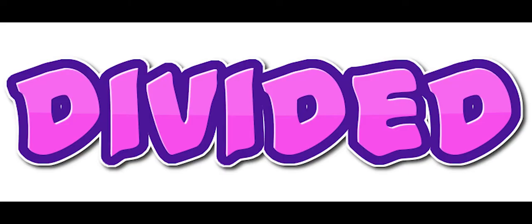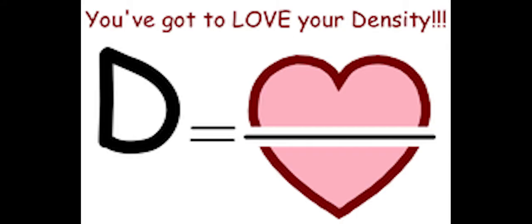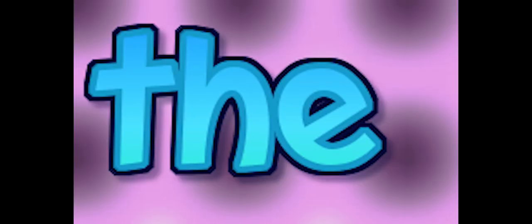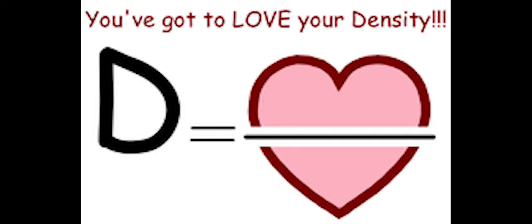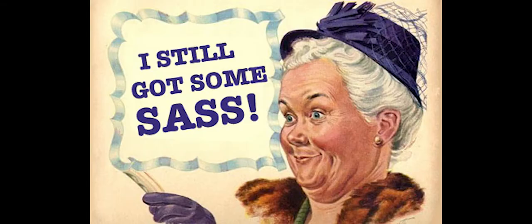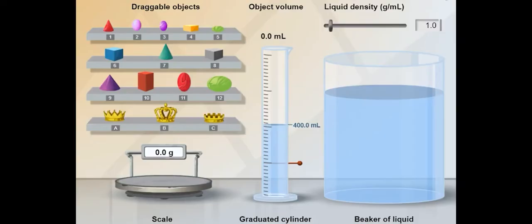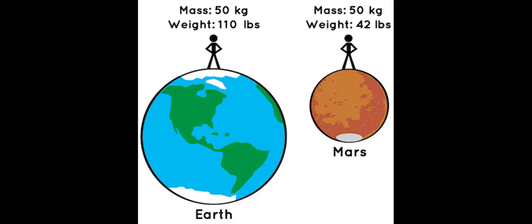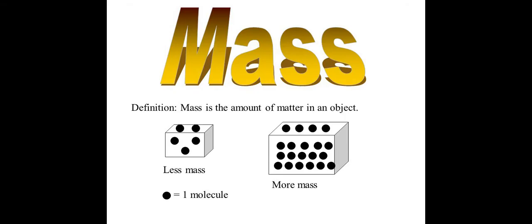Mass divided by the volume — density! Mass divided by the volume density. Gotta get the mass, girl. Tell you what you need: get a balance. Doesn't matter what kind — digital or triple beam. Mass is always measured using grams as units. Weight will change, mass will not — that's what I tell my students.